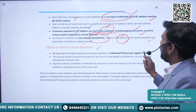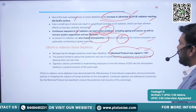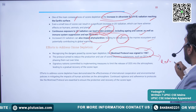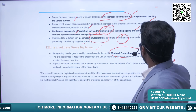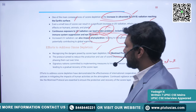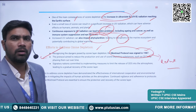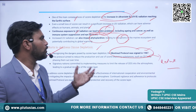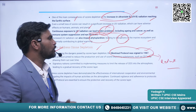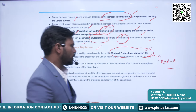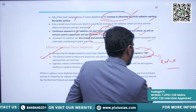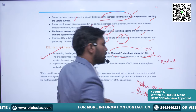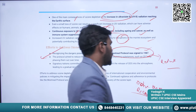Efforts to address ozone depletion: the Montreal Protocol was signed in 1987, aiming to reduce ozone-depleting substances, especially chlorofluorocarbons. The protocol has been successful — these substances have been significantly reduced and their use largely eliminated. The latest satellite images show that the ozone layer has recovered to some extent.